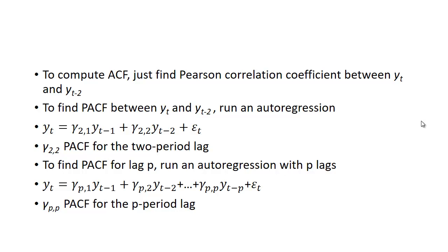Here we're going to have y_t = γ_2,1*y_(t-1) + γ_2,2*y_(t-2) + ε_t. The notation 2,1 means we're looking for the autocorrelation for the second lag and this is the first coefficient. The partial autocorrelation function is just the γ_2,2.